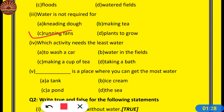Number 4: Which activity needs the least water? Sab se kam paani kis activity mein hum istemaal karte hain? Options: A. To wash a car, B. Water in the fields, C. Making a cup of tea, D. Taking a bath. The answer is C — making a cup of tea.